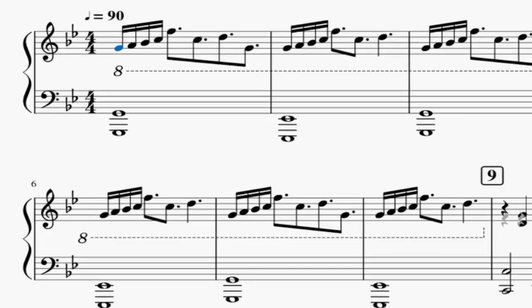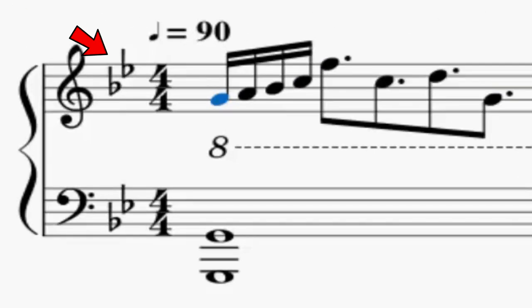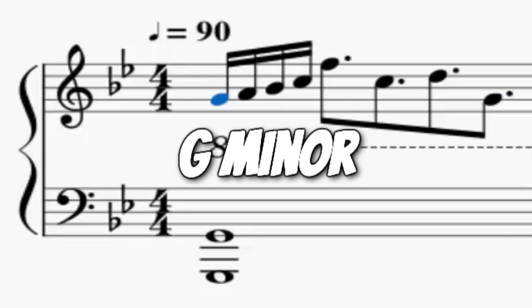So let's start off with the key signature of the piece. The key signature has Bb and Eb in it, and we also start off with an octave G in the base of the piano, which informs us that we're in the key of G minor.